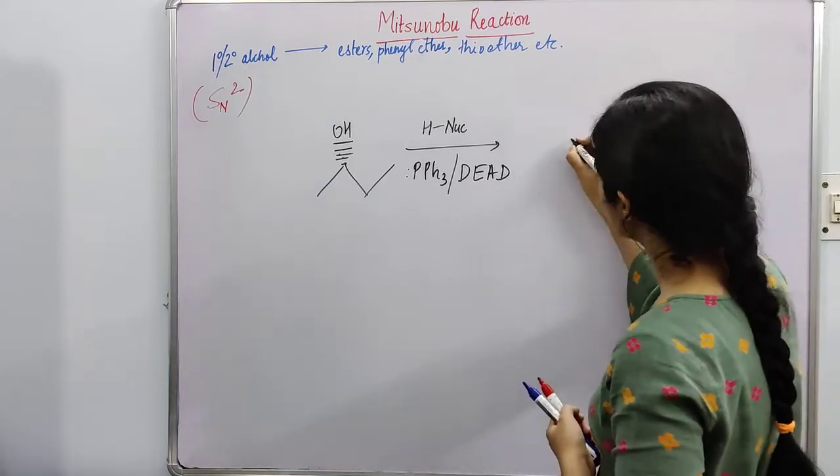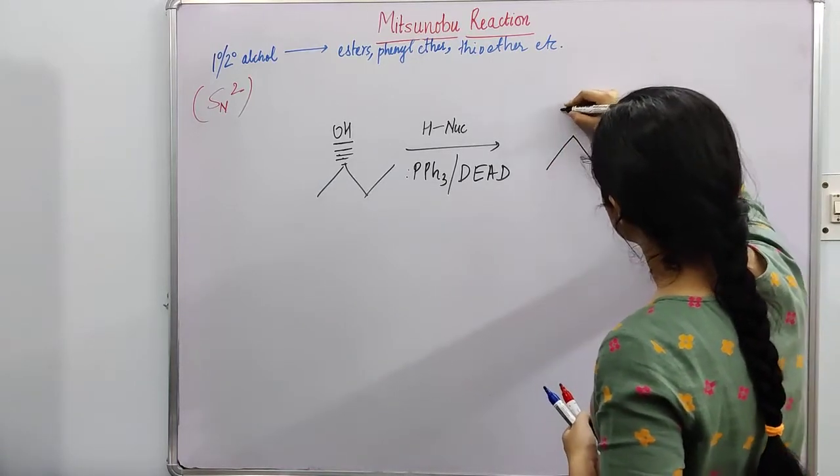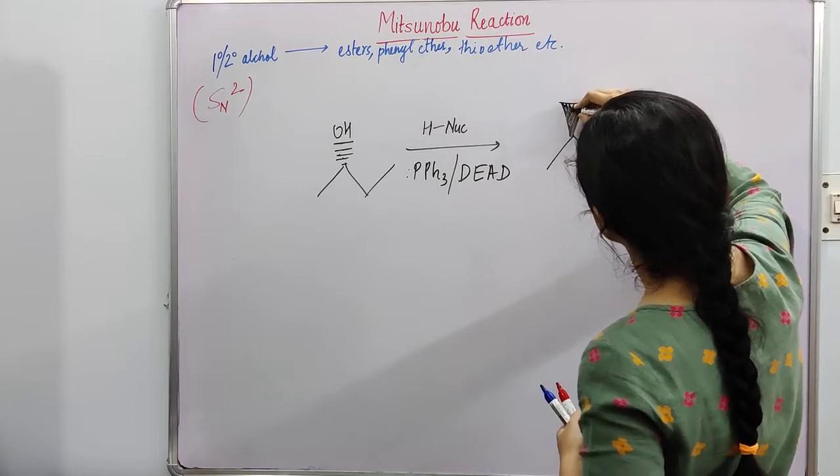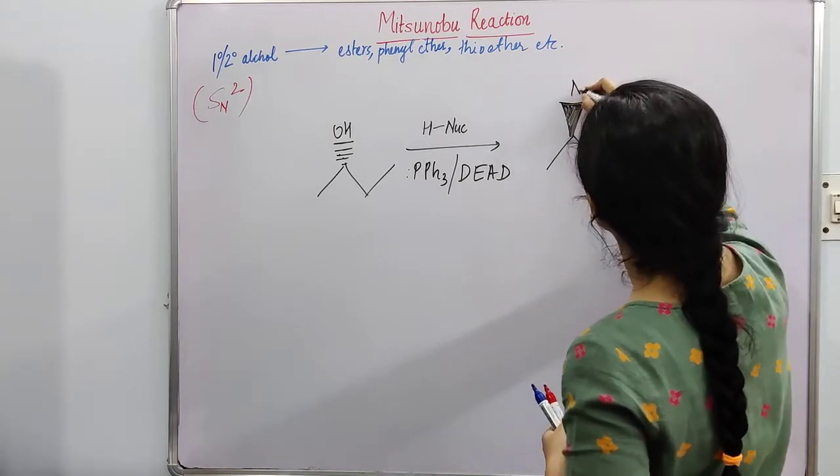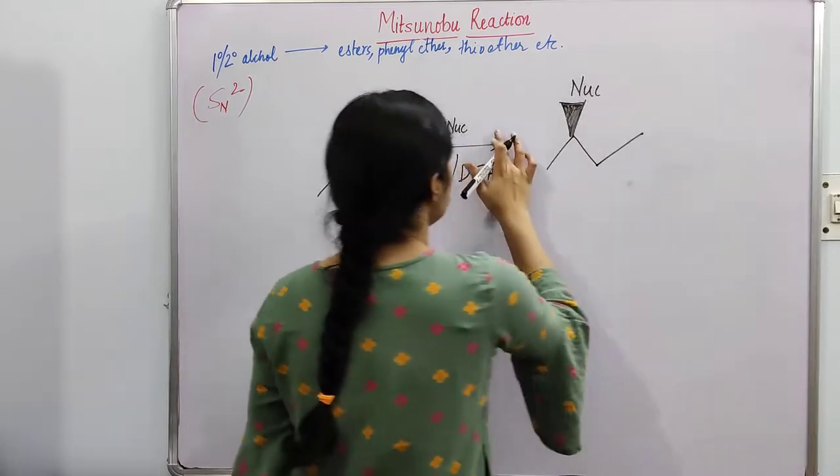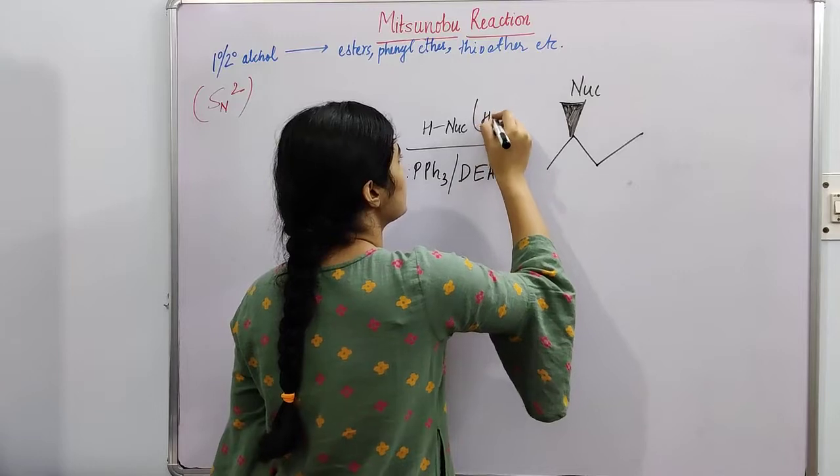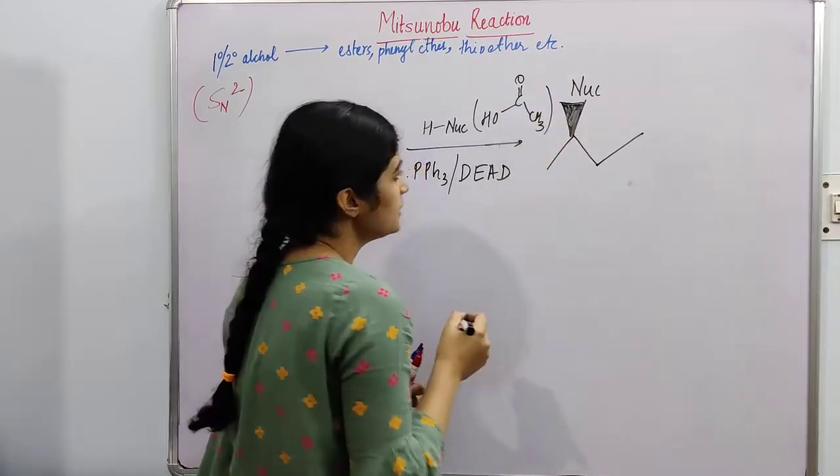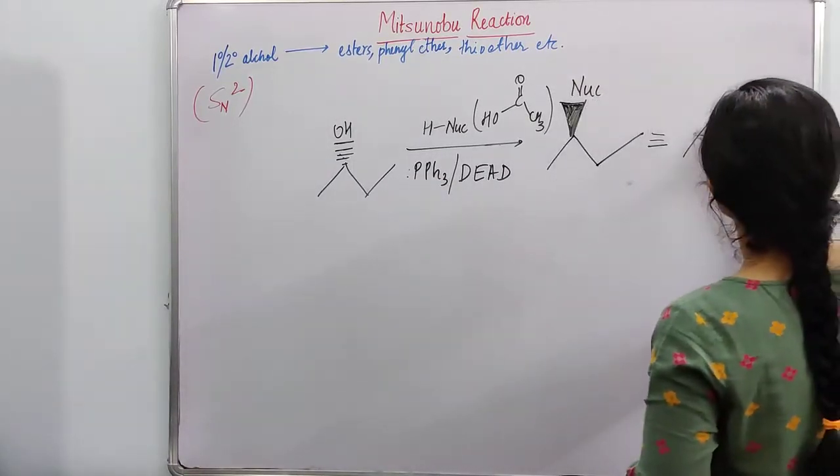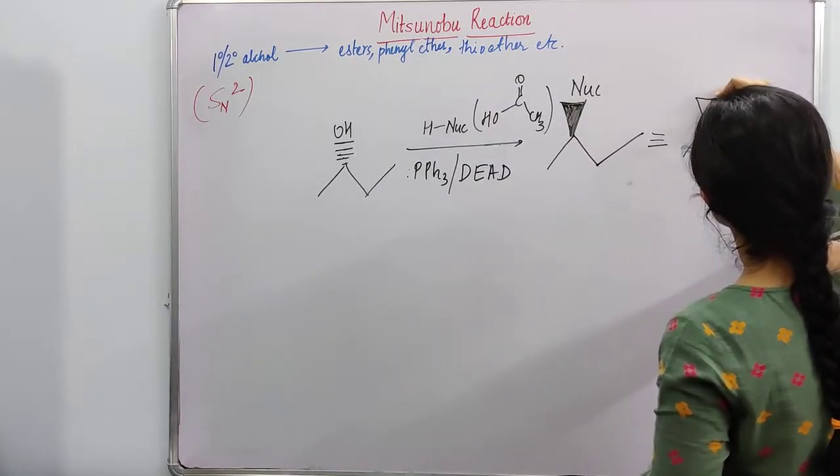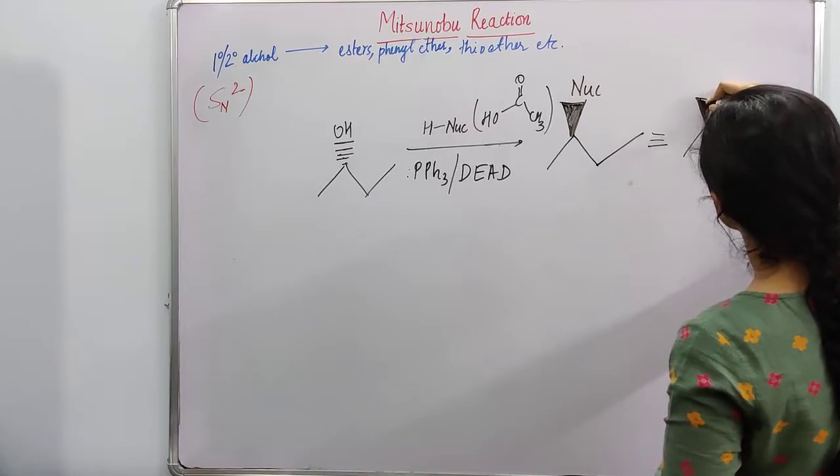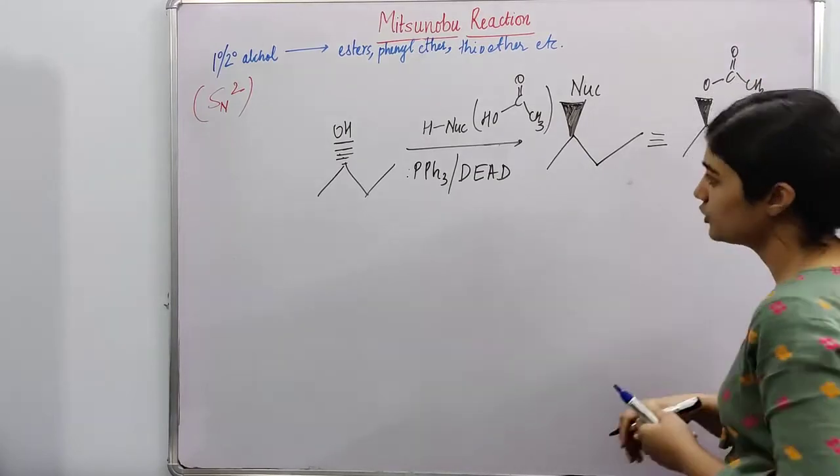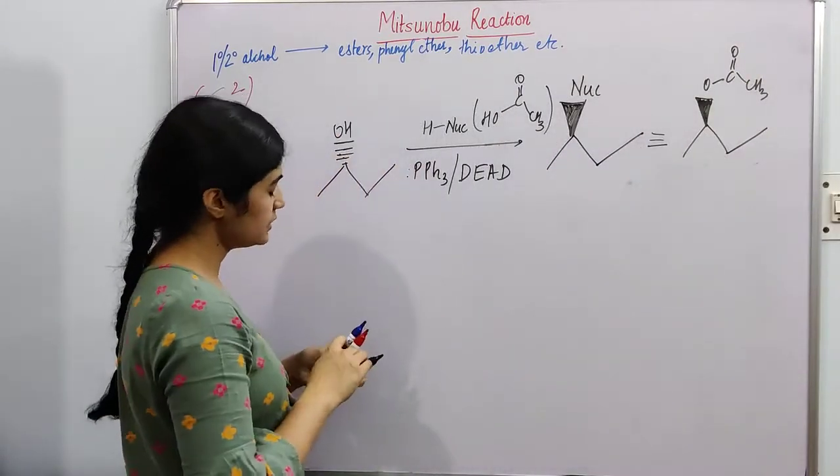So here the product will actually be inversion of the configuration. You will have some substitution here, and the substitution will be your nucleophile. Let's suppose we are taking acetic acid here. So you will get a product in a similar fashion. Now, let's see what are the other things we are taking.